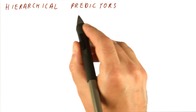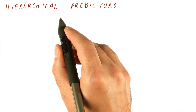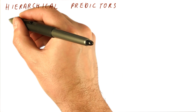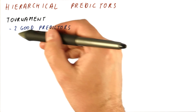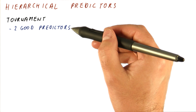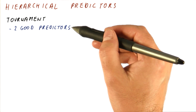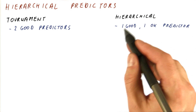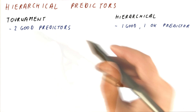Now let's see another type of predictor that combines prediction decisions, which is called a hierarchical predictor. It is similar to a tournament predictor, but the tournament predictor typically is trying to combine two good predictors — one is better for some branches, the other for others. A hierarchical predictor is trying to combine a good predictor with an okay predictor.